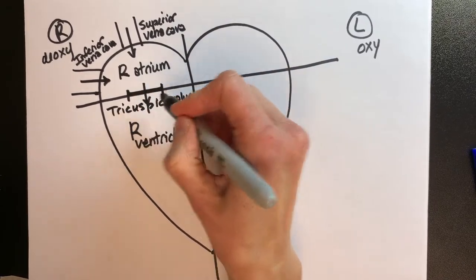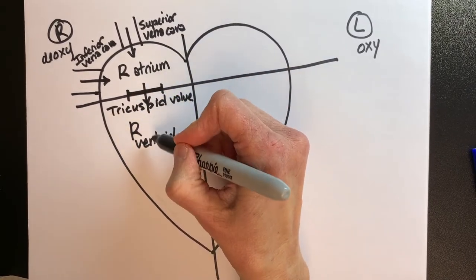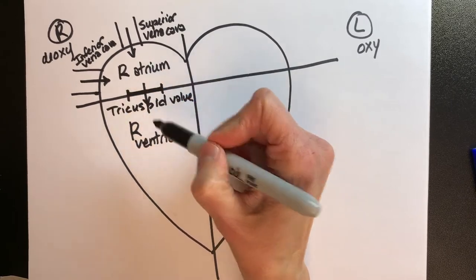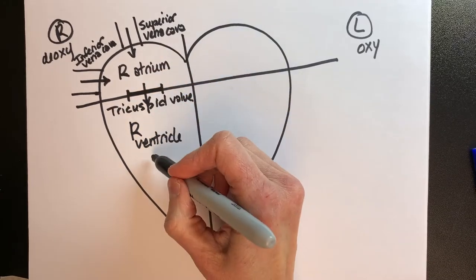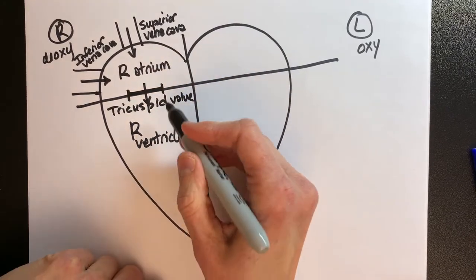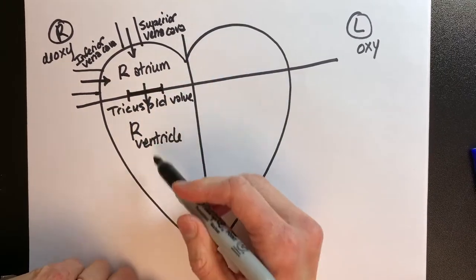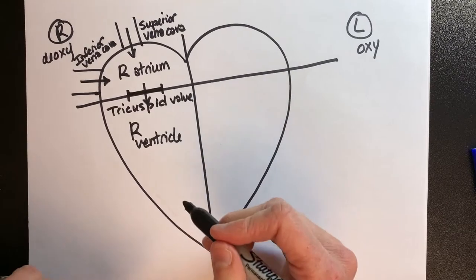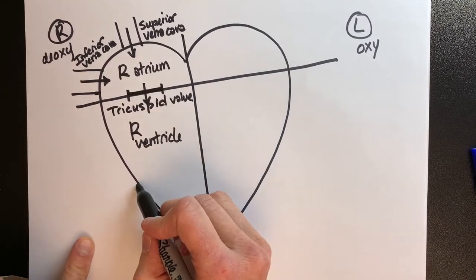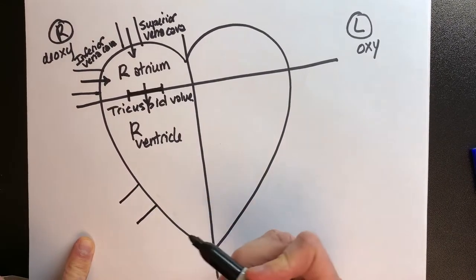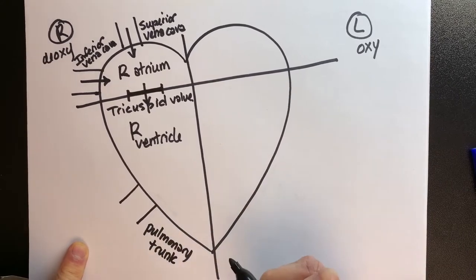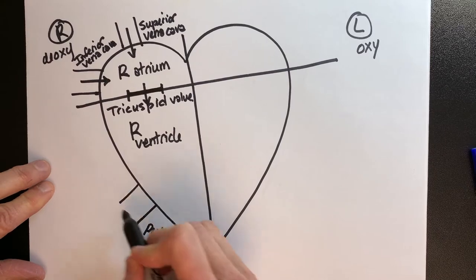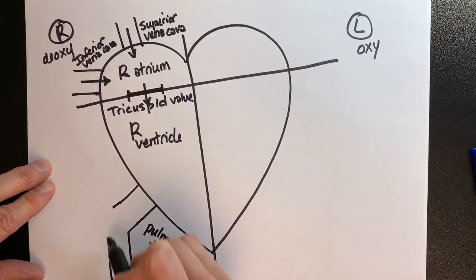We go through the tricuspid valve and then we close it behind us so that blood is not allowed to go back up into the right atrium. So our deoxygenated blood falls downstairs into the right ventricle through the tricuspid valve. We shut this door behind us so the blood doesn't regurgitate. Then we have to get out of the right ventricle to get to the lungs, through something called the pulmonary trunk — 'pulmonary' meaning lung. A trunk is just a branch or bridge to get somewhere, and trunks usually divide.